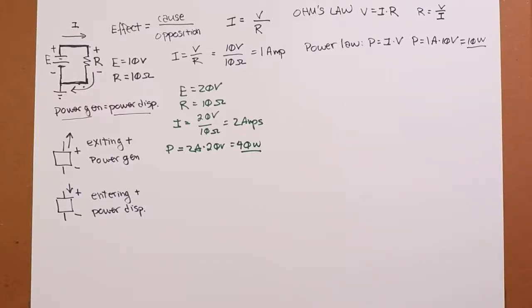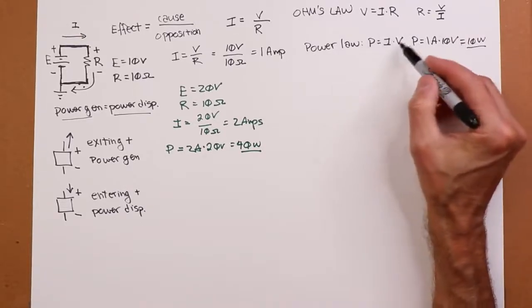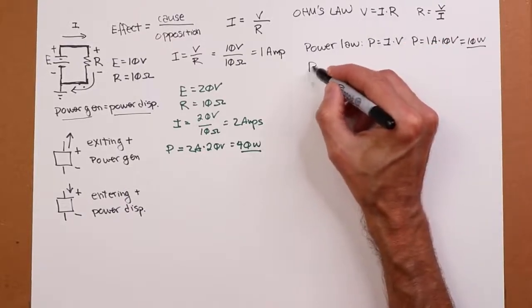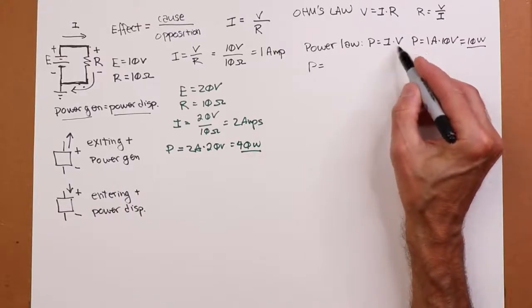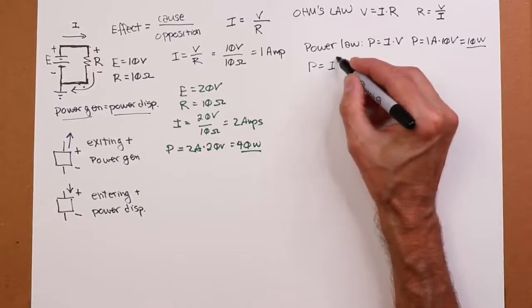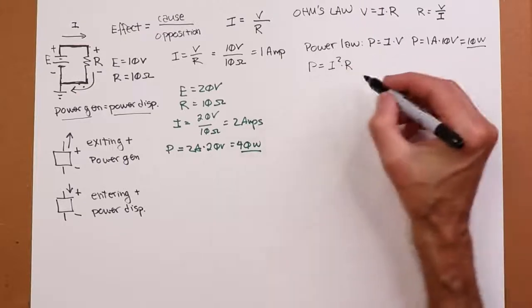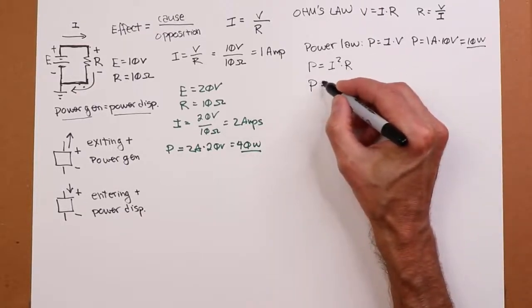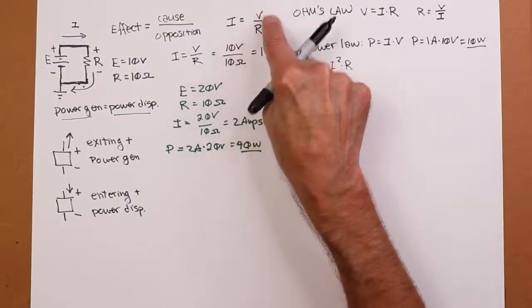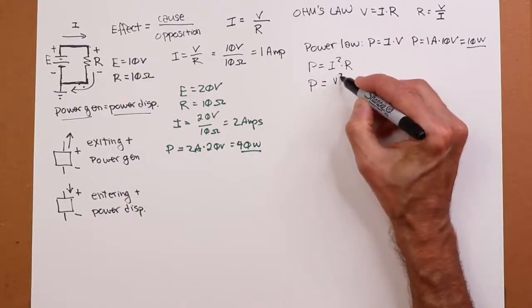Well, we can see that from power law, because after all there's multiple ways of writing power law. You could substitute in the value for V over here with IR. In other words, P can also be equal to I times V where V is IR. In other words, I times I times R. P is also I squared times R.